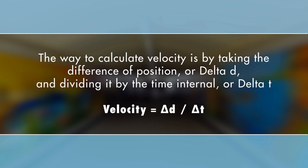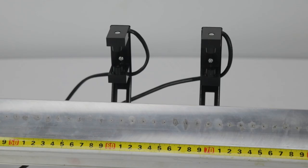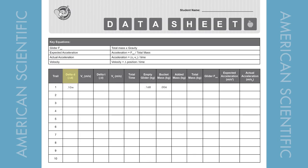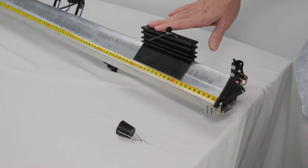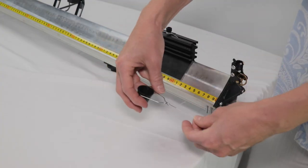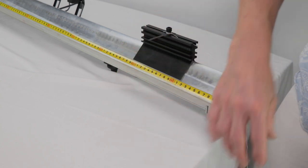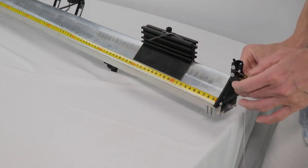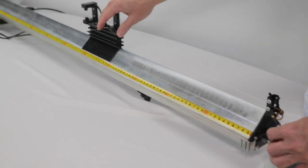Velocity is calculated by taking the difference of position, or delta-d, and dividing it by the time interval, or delta-t. We're going to attach the photo gates at 60 and 70 centimeters, so our delta-d is 10 centimeters, which we'll record in the delta-d column. Now attach the pulley so that it hangs over the end of the table, then tie one end of the string to the glider and the other to the weight bucket, and thread the string over the pulley.